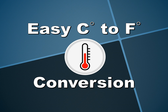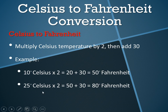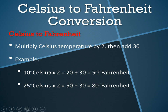It's not going to be 100% accurate, but as you'll see, it's fairly accurate and very easy to remember. To convert Celsius to Fahrenheit, you multiply the Celsius temperature by 2, and then add 30. So all you need to remember is 2 and 30.